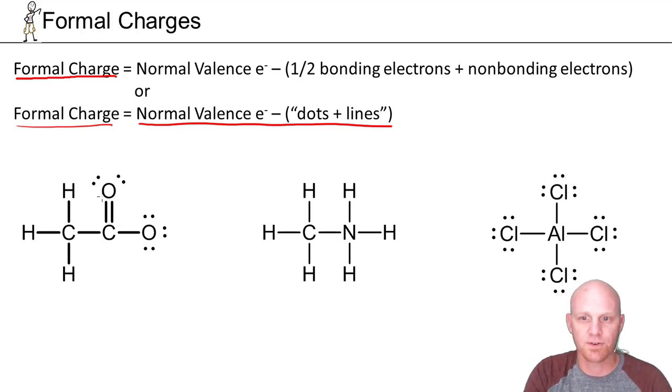So the way this works, take a look at this first structure. You're asked to assign formal charges for all these. If we look at the case of hydrogen, hydrogen's got one valence electron, and each of the hydrogens has one line around it. One minus one equals zero, and all three of them have no formal charge.